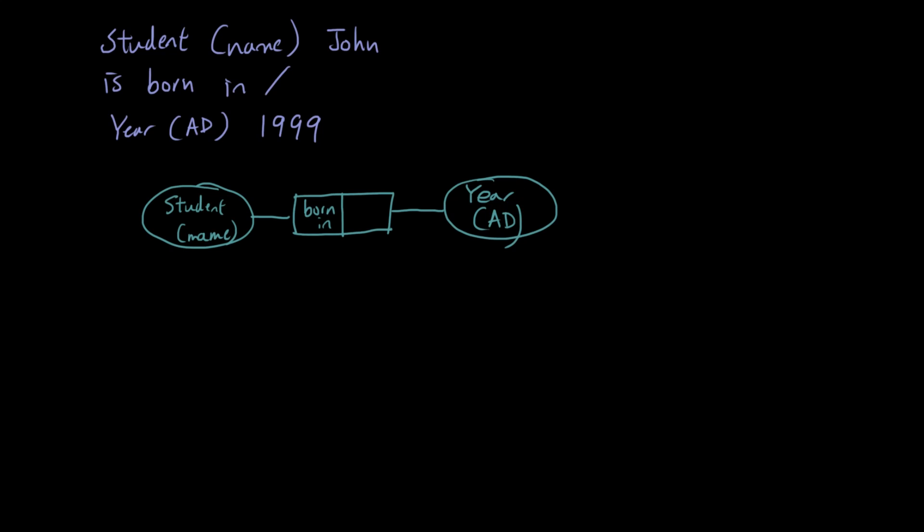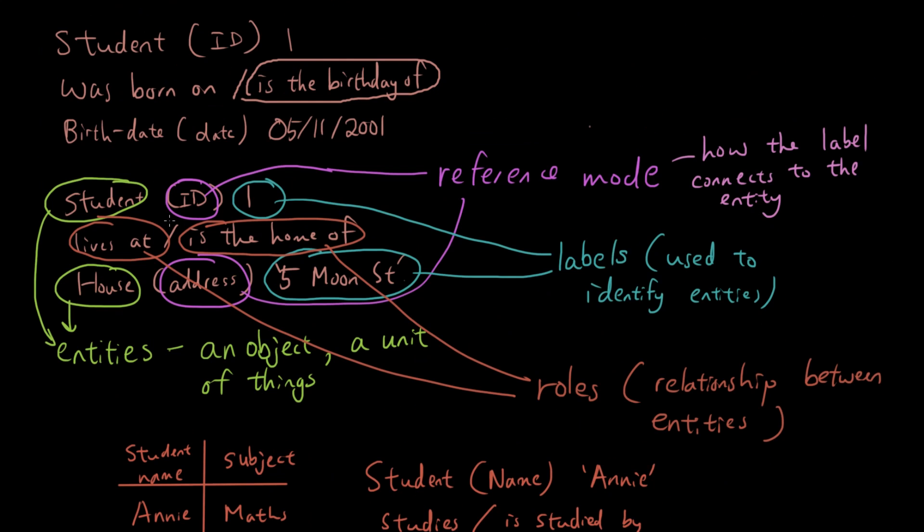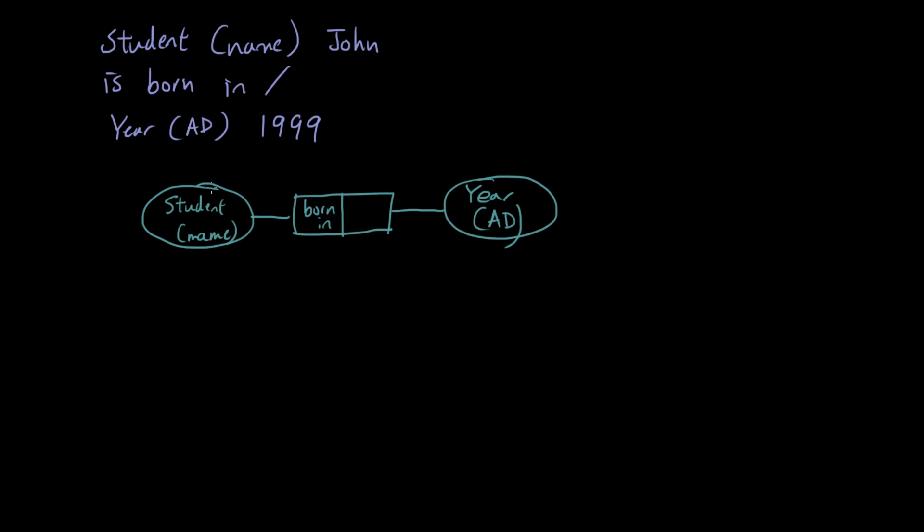So if you guys remember in our example, we identify the students using their ID, right? We identify students using their ID, and then we also have students living in a house. So we have student, right? We can have one ellipse having multiple roles to play.